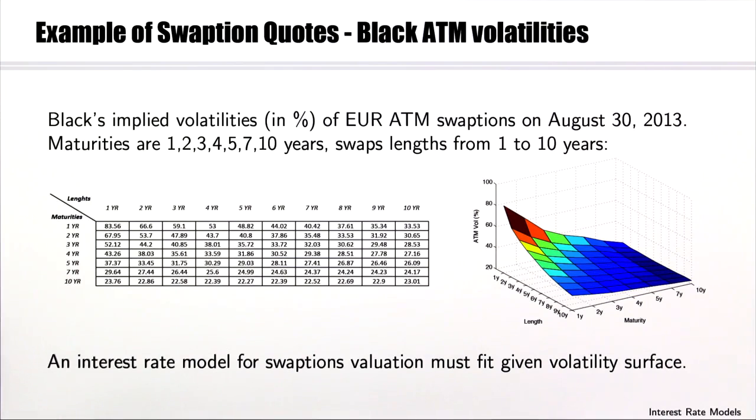Here is an example of swaption quotes in terms of Black's implied volatilities of at-the-money swaptions in the eurozone in August 2013. Maturities range from 1 to 10 years and the swap length from 1 to 10 years. So the first row gives us the 1 year into 1 year, 2 year, 3 year and so on, 10 year swaption quotes in percentage points in terms of Black's implied volatilities.